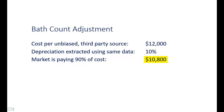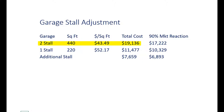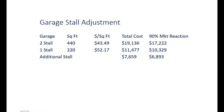This is a recognized technique of developing a market-based adjustment — market-based because the market is paying 90% of cost. A bathroom is an example of a unit adjustment, and this same thinking applies to a fireplace. Things get more complicated when we consider components that have square foot costs. A two-stall garage of 440 square feet costs $43.40 per square foot, or $19,136; at 90% of cost, the adjustment for no garage versus a two-stall garage is $17,222. A one-stall garage of 220 square feet has a higher cost per square foot but a lower total cost; the adjustment for no garage versus a one-stall garage is $10,329. The adjustment from one stall to two stalls is $6,893.